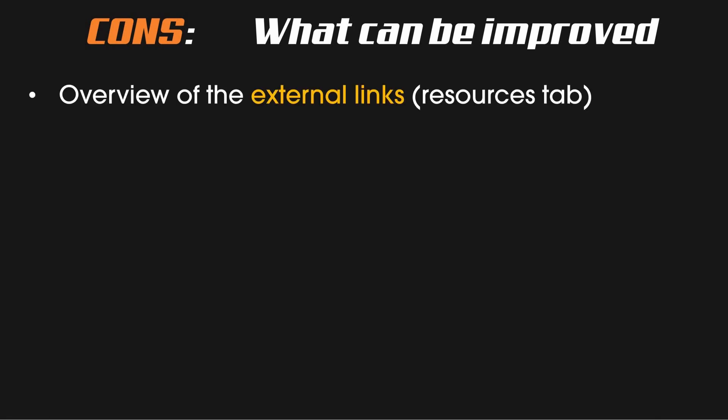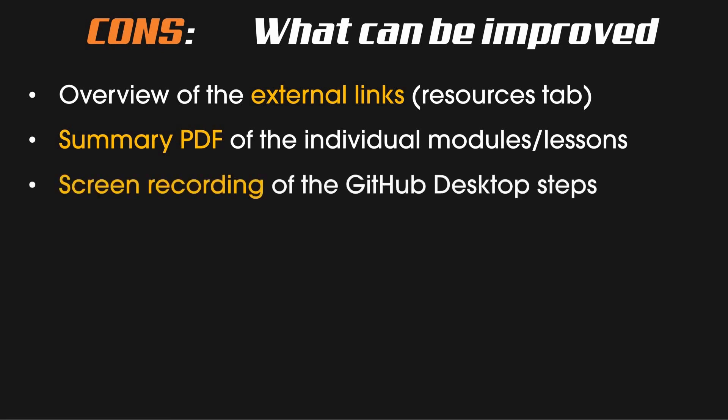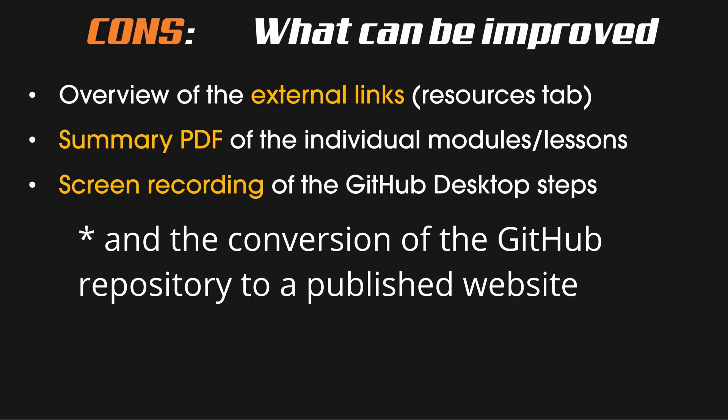There was nothing in the course that I did not like. The only things that could be improved in the future: it would be nice to have a resources tab that gives you an overview of all the external links. Also, the four different modules with the 30 lessons would benefit from a one-page summary of each module as a printout to have some visual representation of what was covered. The lessons are easy to follow step by step, but I had some struggles with the GitHub Desktop software, and a short screen recording video on how to use the software could have been helpful.